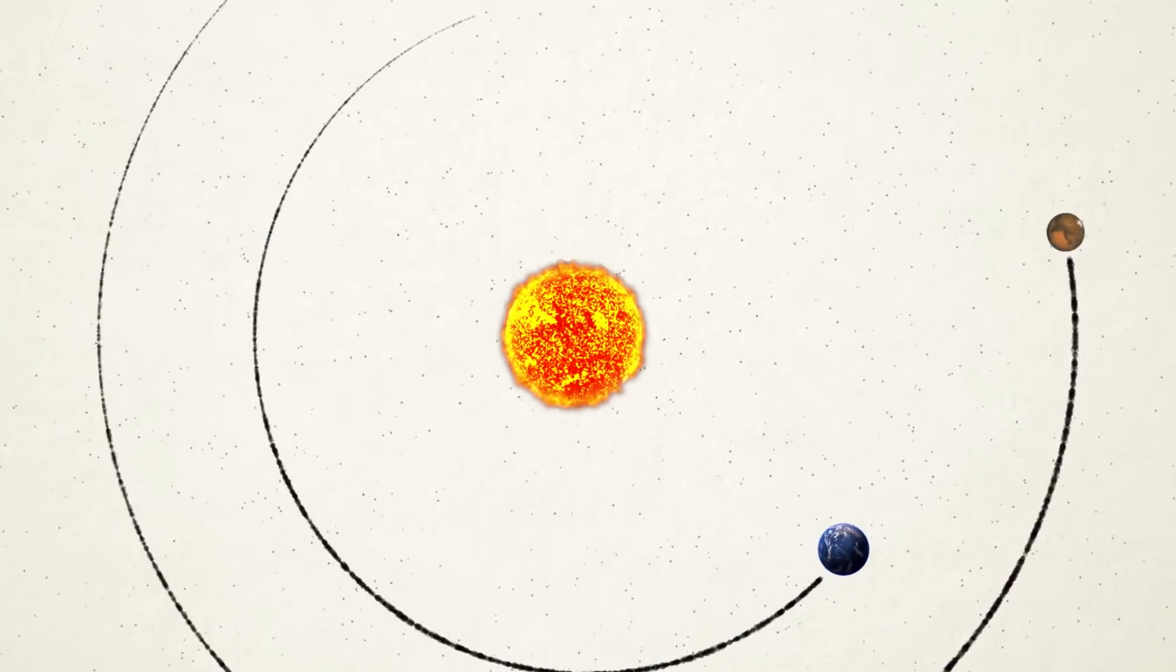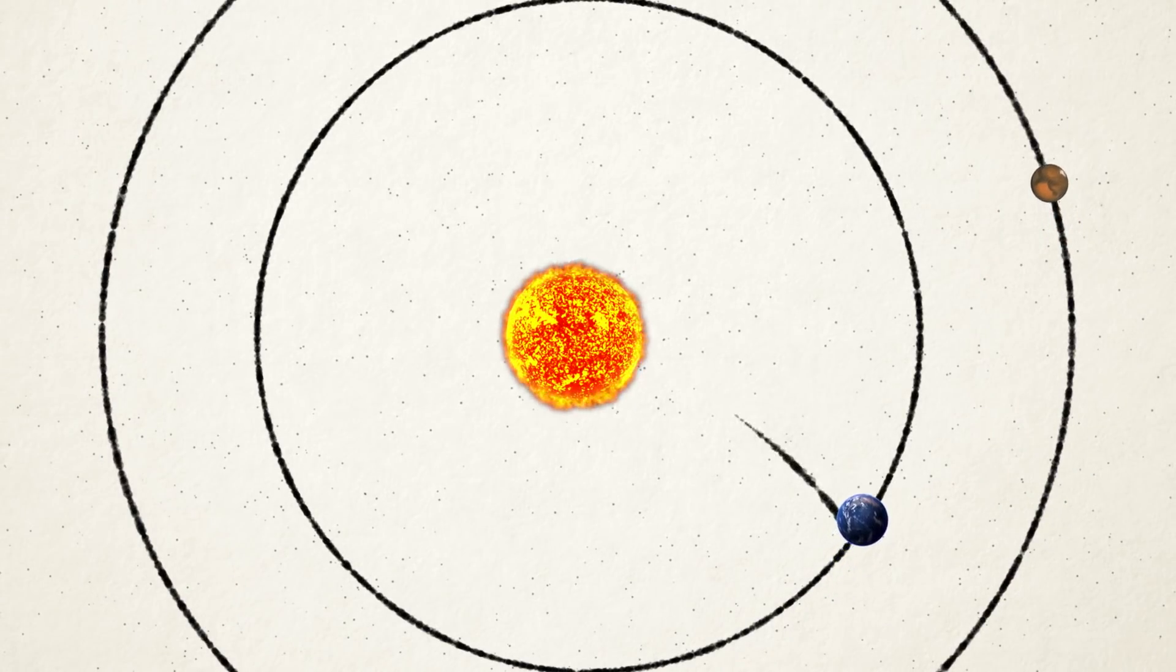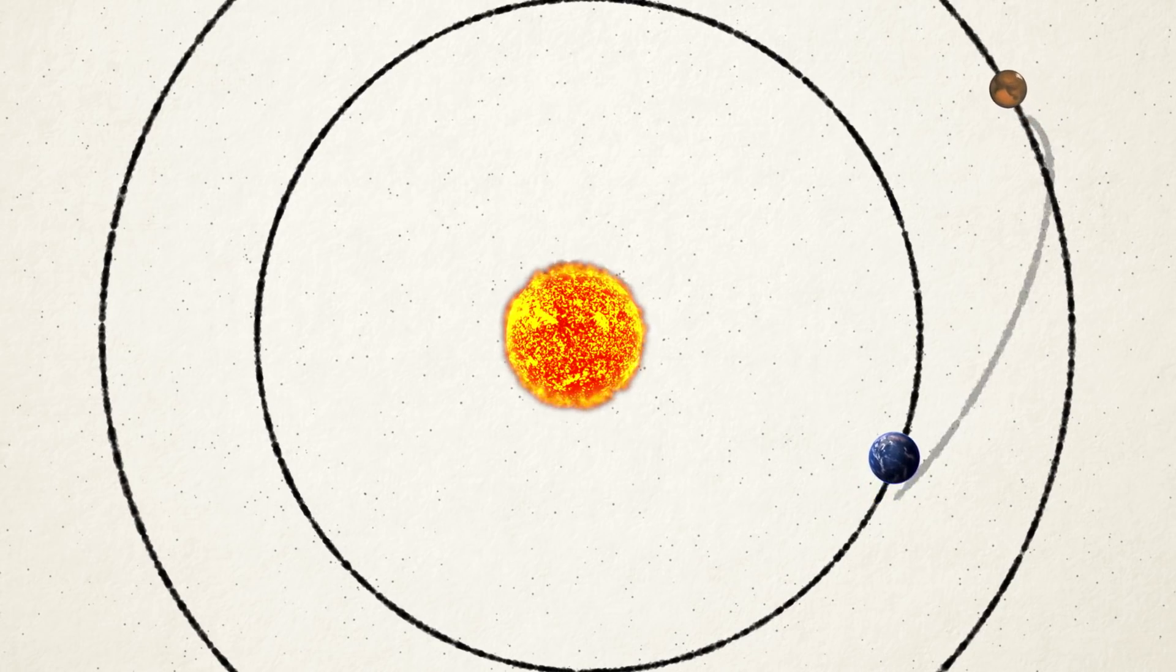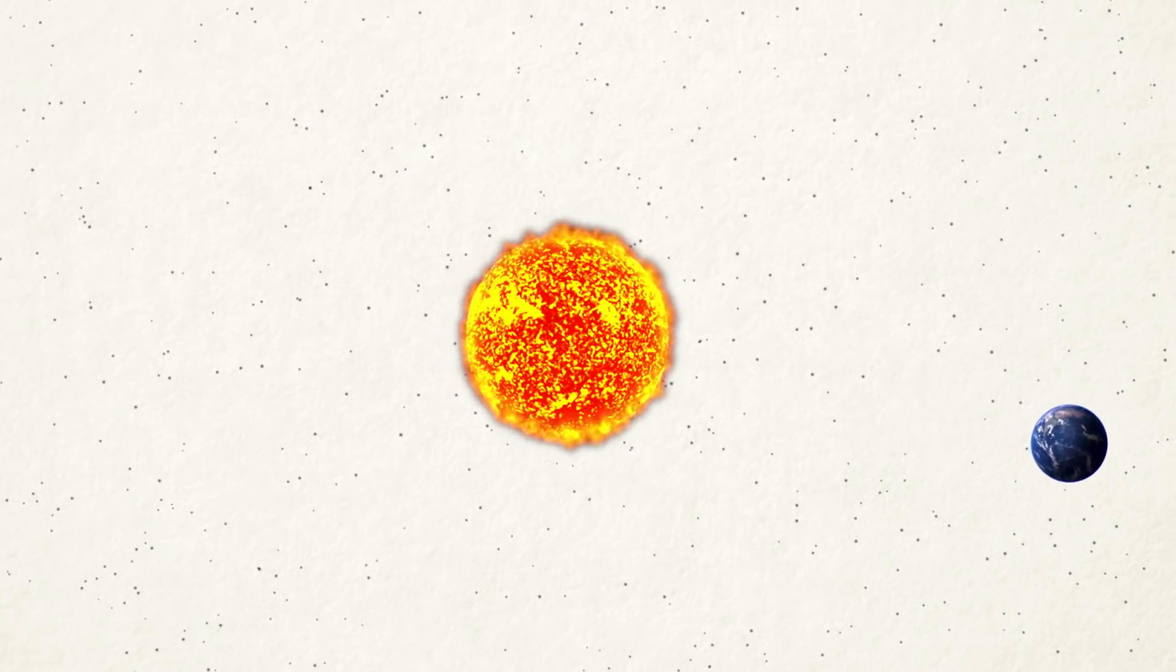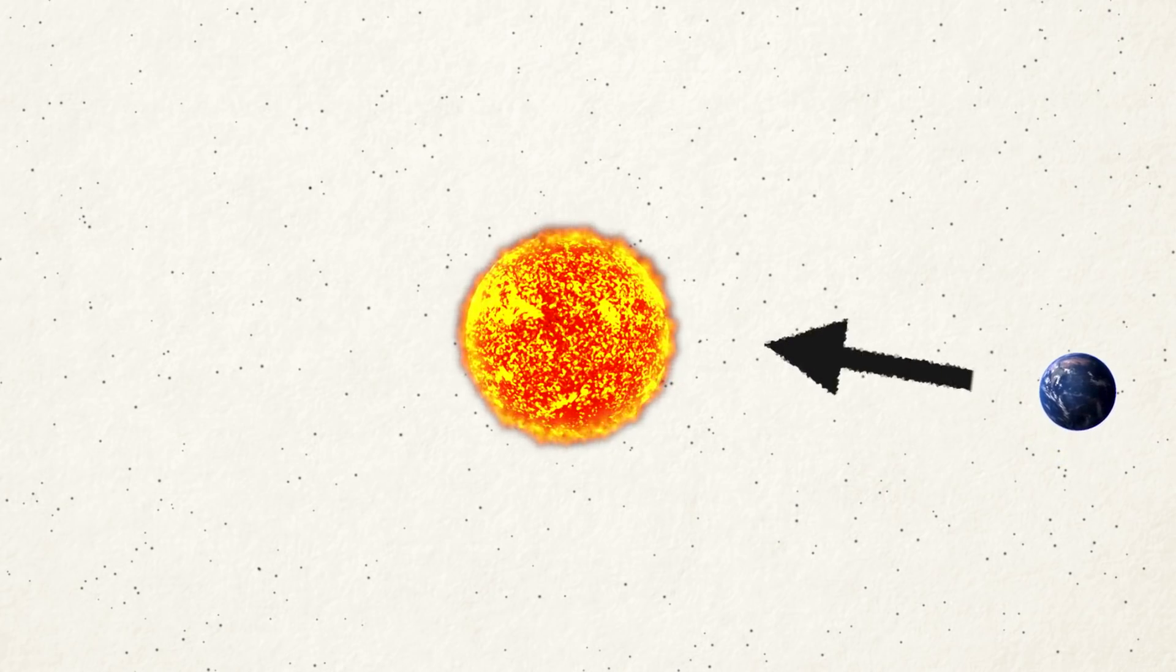It takes 55 times more energy to go to the Sun than it does to go to Mars. Why is it so hard to get to the Sun? The answer is related to why Earth doesn't just fall straight into the Sun, despite the strong gravitational attraction.